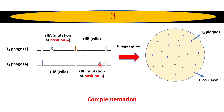Surprisingly, the phages could grow rapidly in the E. coli culture. That means these two types of phages complement each other — this is called a positive complementation test. The first two tests show no complementation and are placed in the same complementation group, but here we have two complementation groups.